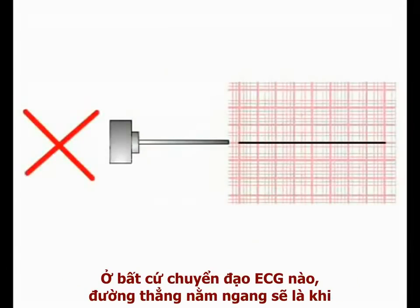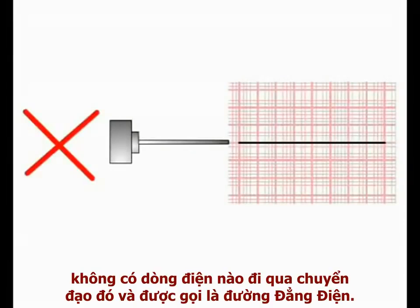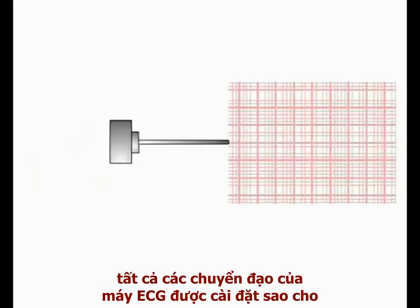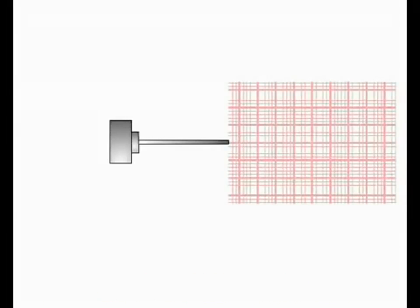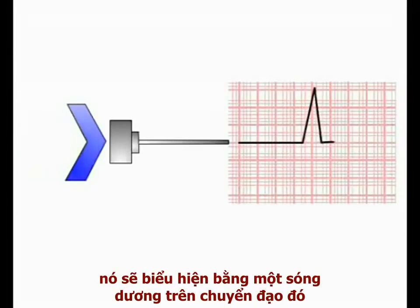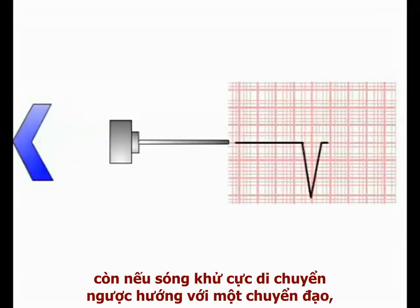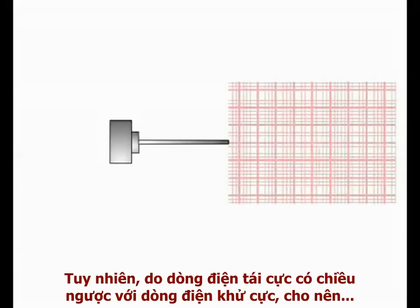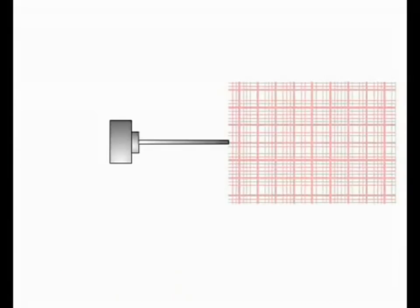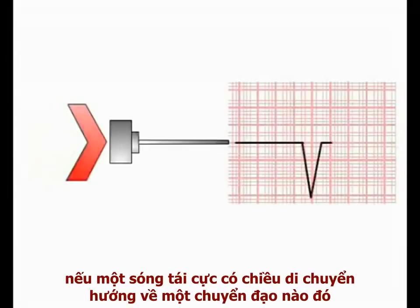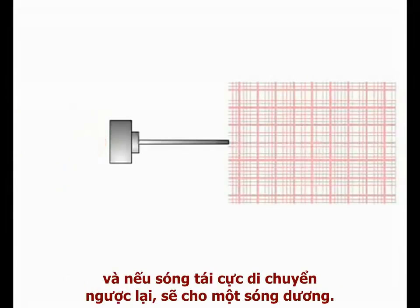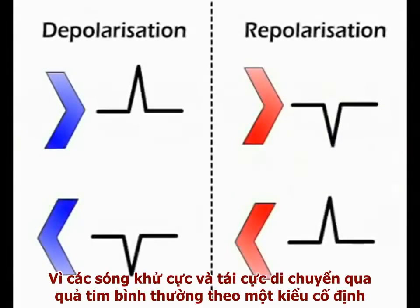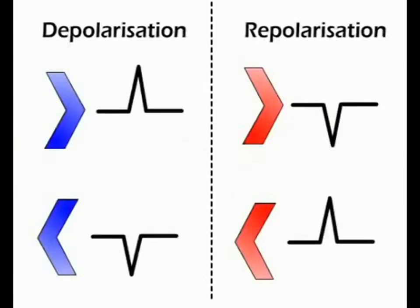In any ECG lead, the flat line recorded when no net current is flowing is termed the isoelectric line. All ECG leads are set up such that depolarising current moving towards a lead produces a deflection above the isoelectric line — a positive deflection — while depolarising current moving away from the lead produces a deflection below the isoelectric line — a negative deflection. In contrast, repolarising current has the opposite polarity to depolarising current. Therefore, repolarising current moving towards a lead produces a negative deflection, while repolarising current moving away from the lead produces a positive deflection.